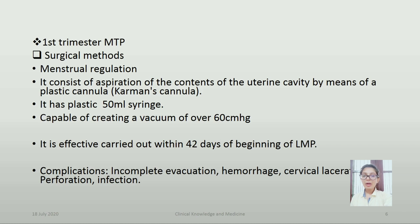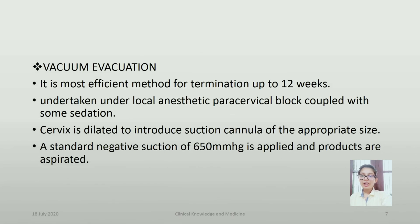Complications of menstrual regulation: incomplete evacuation, hemorrhage, cervical laceration, perforation, and infection. Vacuum evacuation is the most efficient method of termination up to 12 weeks, undertaken under local anesthetic paracervical block coupled with some sedation. The cervix is dilated to introduce a suction cannula of the appropriate size, and standard negative suction of 650 mm Hg is applied and products are aspirated.